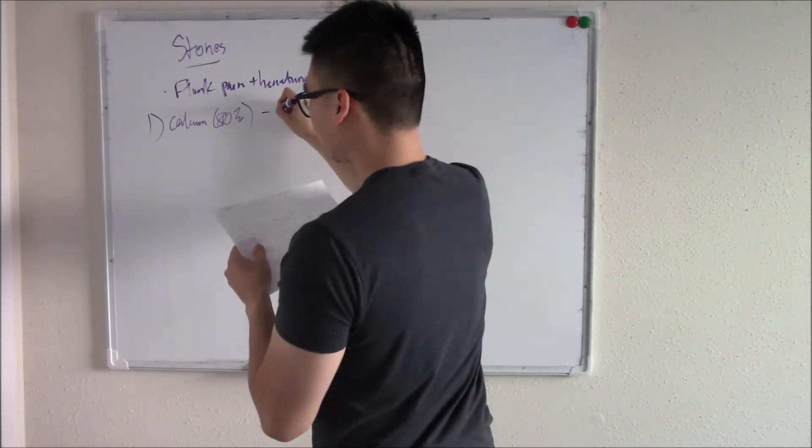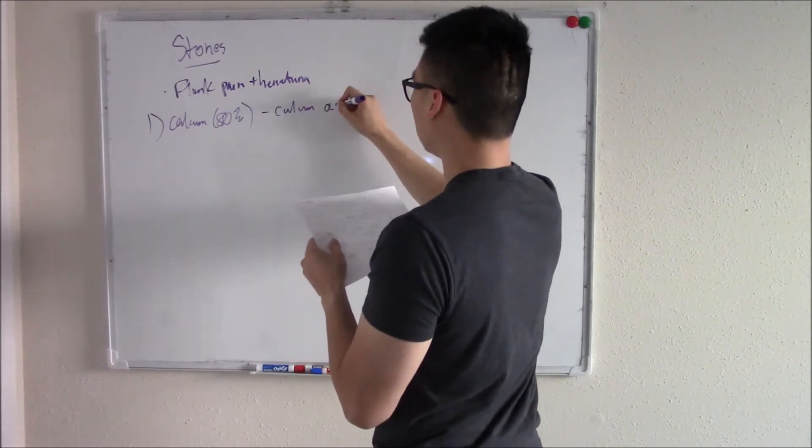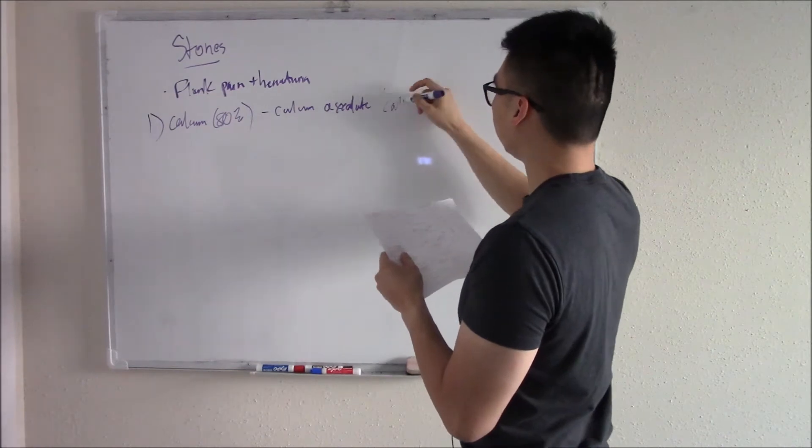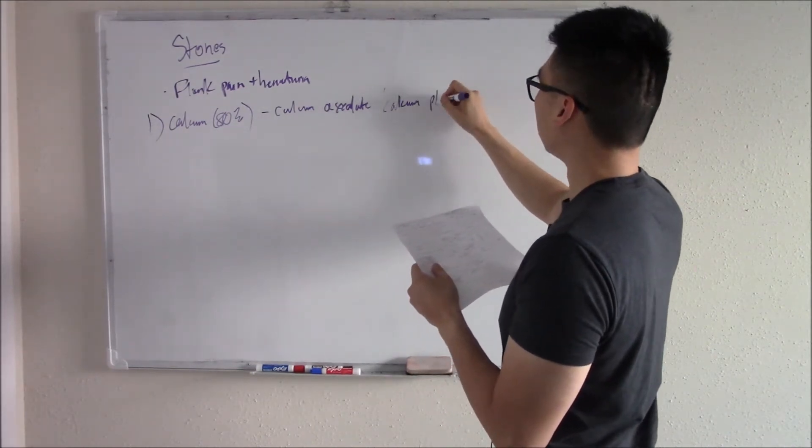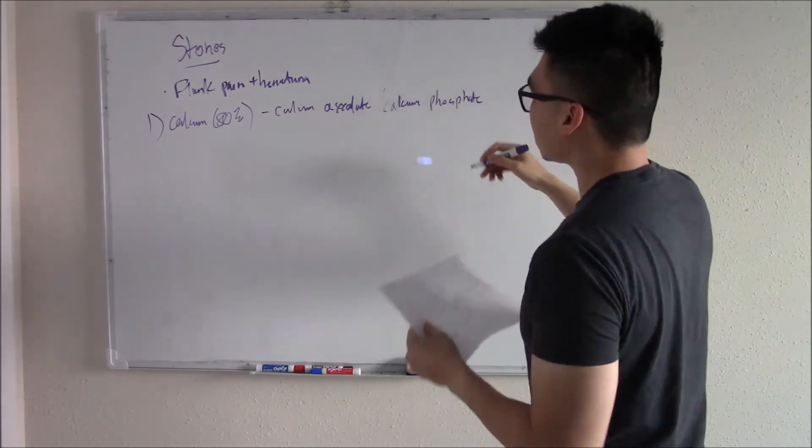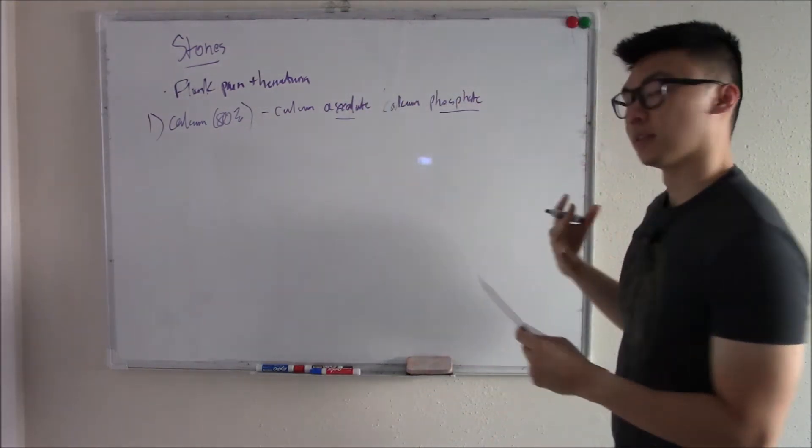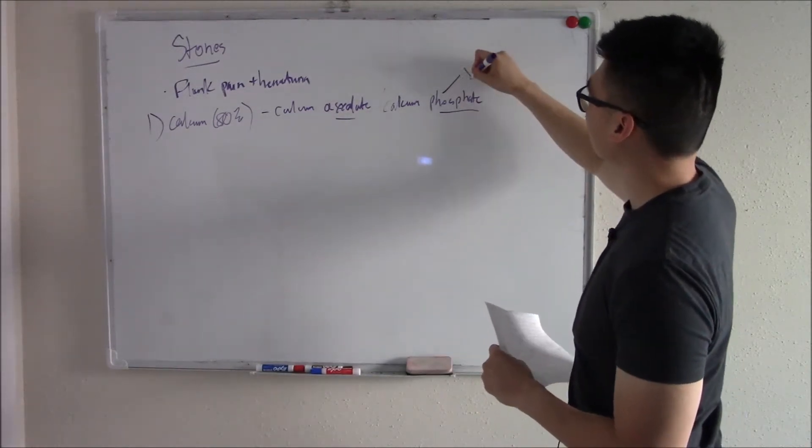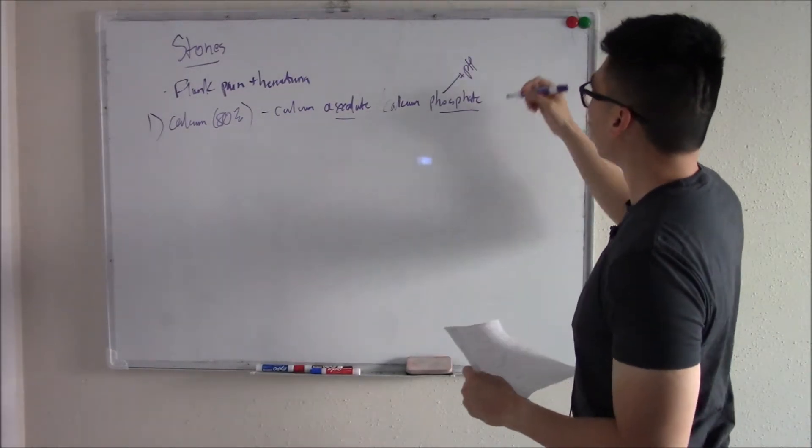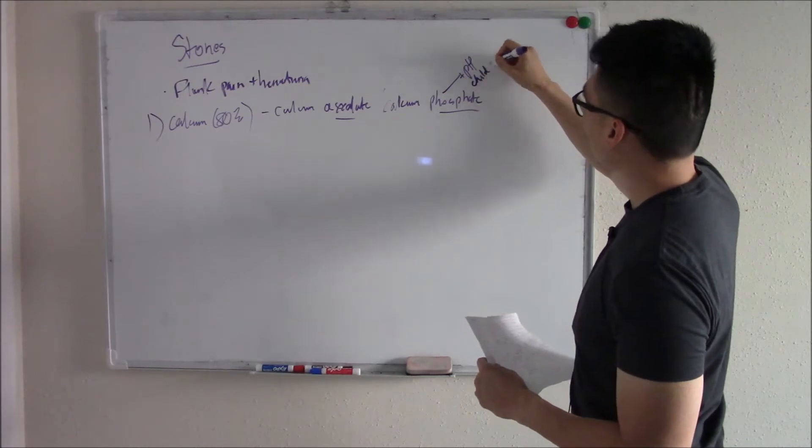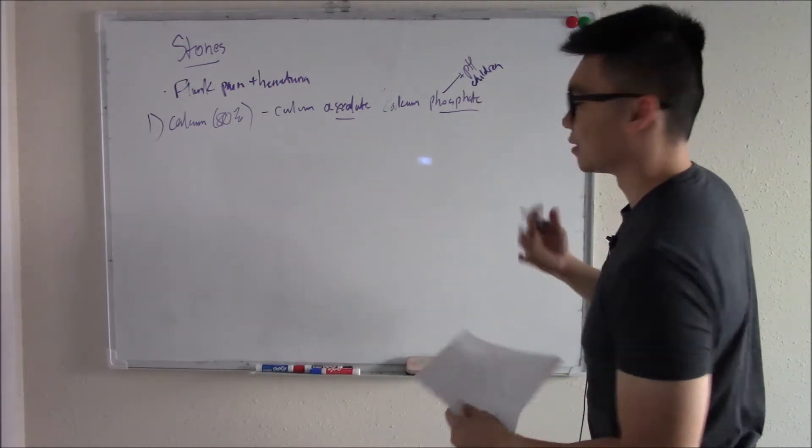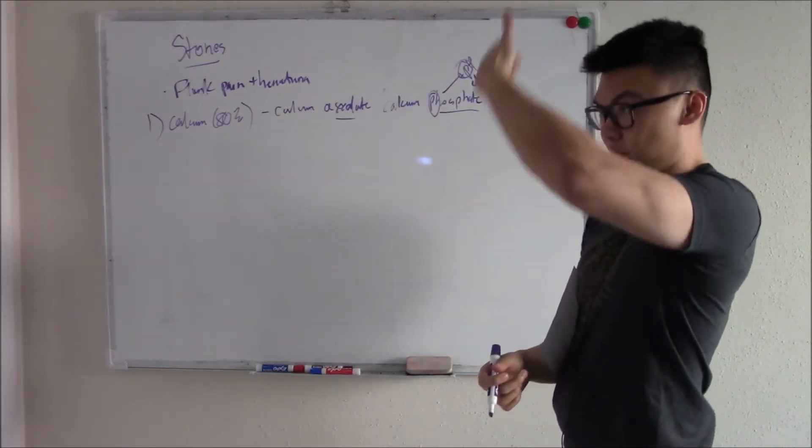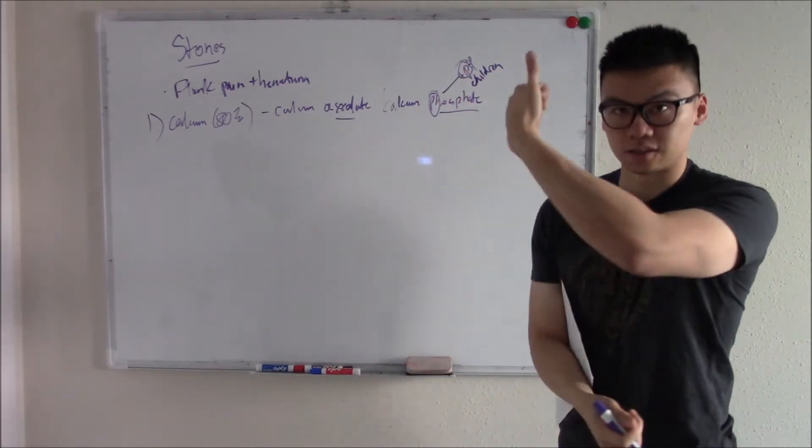They can either be calcium oxalate or they can be calcium phosphate, depending on the pH level. Higher pH, more alkaline, tends to favor phosphate. Higher pH is seen more in children. The easy way I remember is there's a P in phosphate and P in pH.